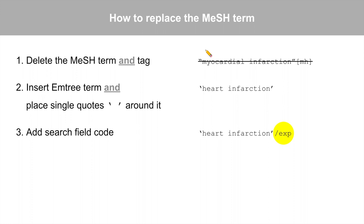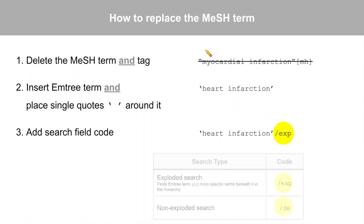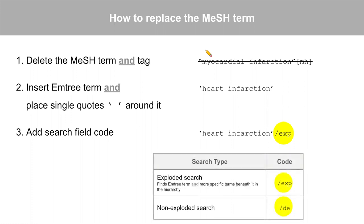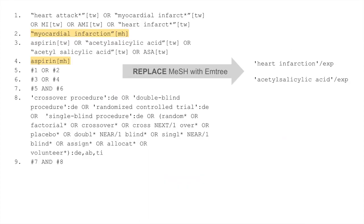To replace the MeSH term, delete the term and don't forget to remove the search tag. Next, insert the EmTree term, placing single quotation marks around it, and add the appropriate search field code. Typically, we use an exploded search, which finds the EmTree term and the more specific terms beneath it in the hierarchy. The field code is forward slash exp. Another option is the non-exploded search, which finds the EmTree term only; the field code is forward slash DE. Let's replace the MeSH terms in our strategy with EmTree terms using an exploded search.